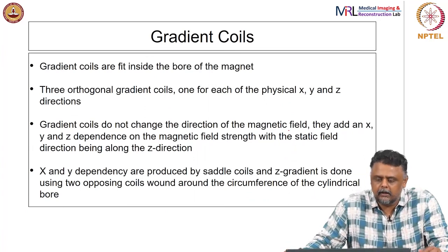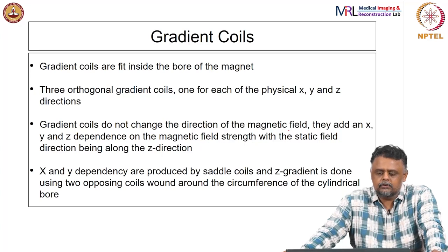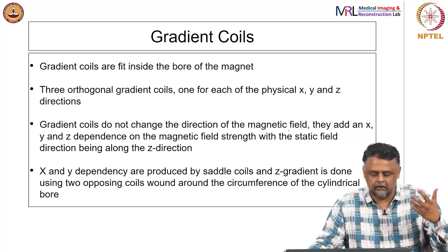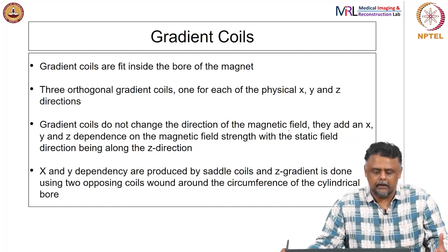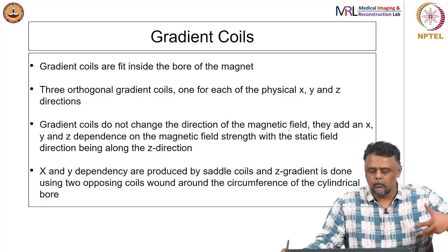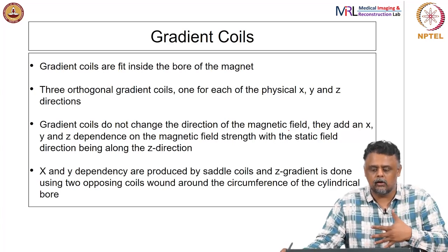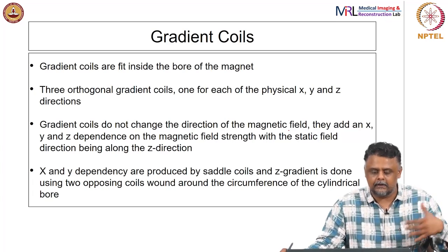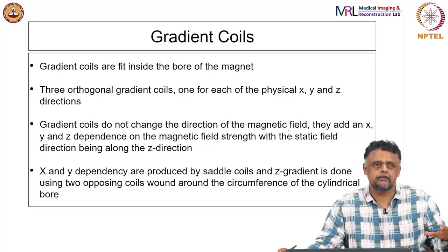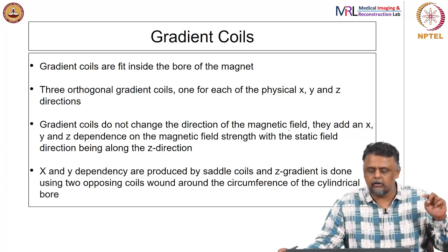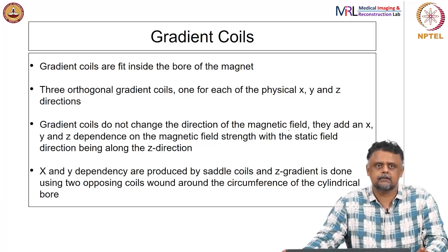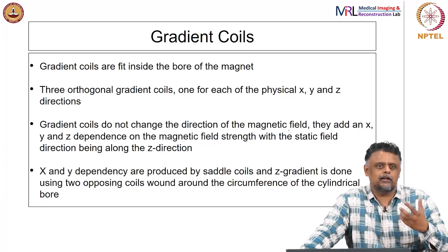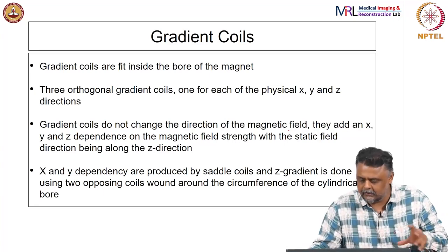The gradient coils are also basically current-carrying wires that give rise to magnetic fields. They are fitted inside the bore of the magnet. There are 3 coils, each orthogonal to the others, producing magnetic field gradients orthogonal to each other. The X and Y dependencies are produced by saddle coils and the Z gradient is done using two opposing coils wound around the circumference.